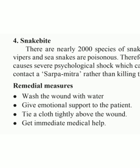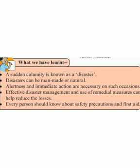Now let's see what we learned in this lesson. A sudden calamity is known as a disaster — achaanak udbhavlelya samasyeela aapatti mhanatat. Disaster can be manmade or natural — manav nirmit kiva nisarga nirmit aapatti. Alertness and immediate action is necessary on such occasions. Effective disaster management and use of remedial measures can help reduce losses — prabhavyi aapatti vyavasthapan va upayyojane mulei haani kami karta yethe. Every person should know about safety, precautions, and first aid.